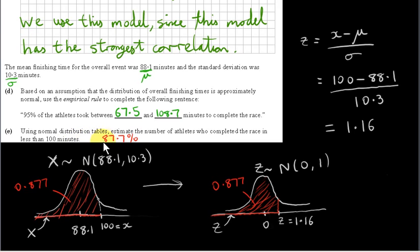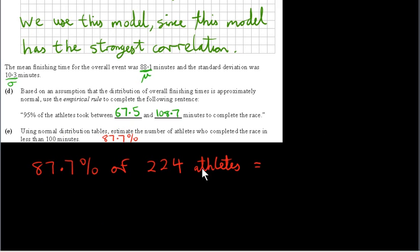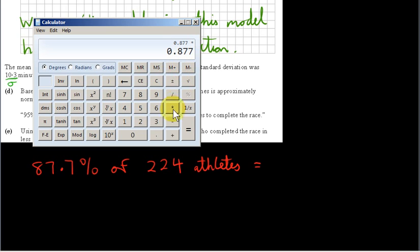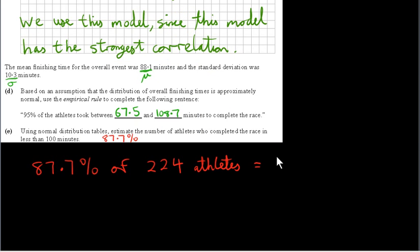Since 224 athletes took part in total, we calculate 87.7% of 224 by multiplying 0.877 × 224, which we round to the nearest integer, giving approximately 196 athletes who completed the race in less than 100 minutes.